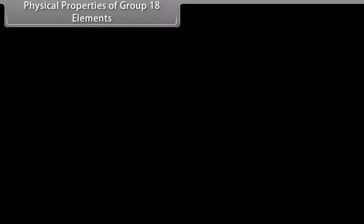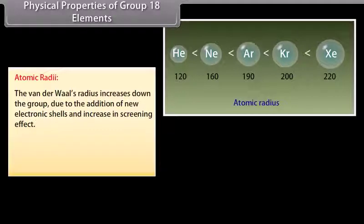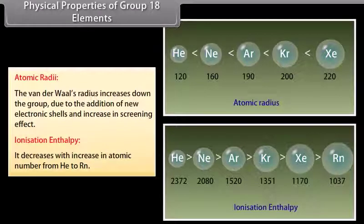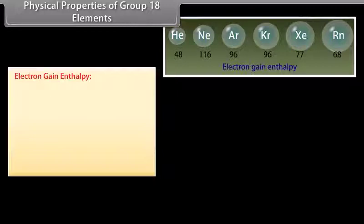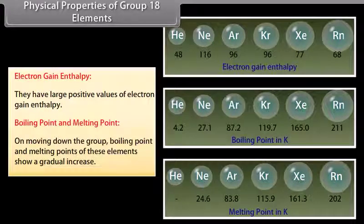Physical properties of group 18 elements — atomic radii: In noble gases, atomic radii correspond to van der Waals radii, which increase down the group due to addition of new electronic shells and increased screening effect. Ionization enthalpy: Very high due to stable configurations; decreases from helium to radon. Electron gain enthalpy: Noble gases have stable electronic configurations and no tendency to accept electrons, giving large positive values of electron gain enthalpy. Boiling and melting points show a gradual increase down the group due to increasing van der Waals forces of attraction.